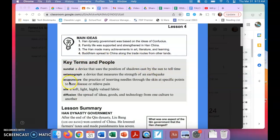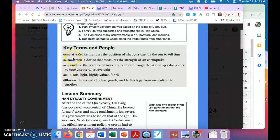So our first word here is sundial, and that is a device that uses the position of shadows cast by the sun to tell time. The next is seismograph, a device that measures the strength of an earthquake.